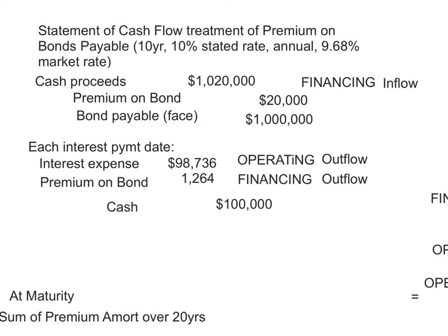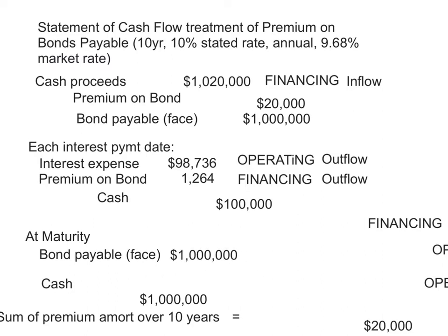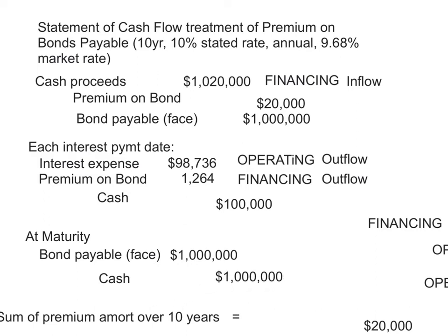When it comes time for bond maturity, the bonds payable is removed for the face amount, and the cash you have to pay out at maturity is a million dollars — and that goes as a financing outflow.